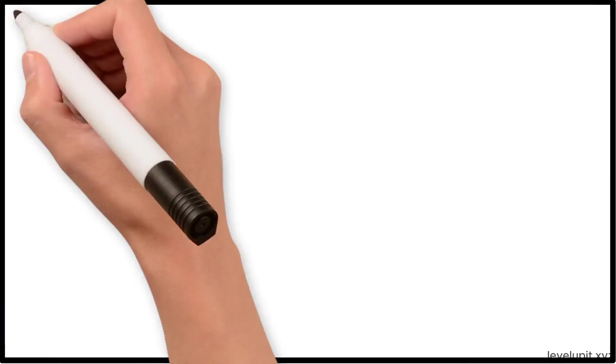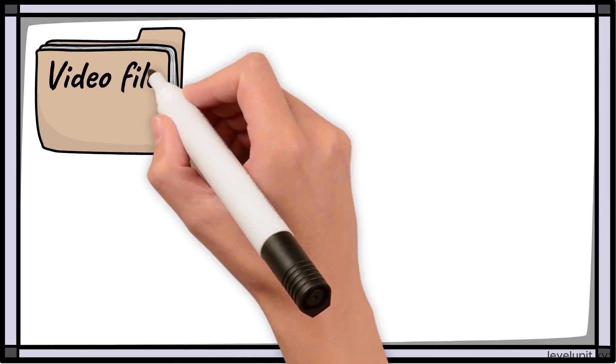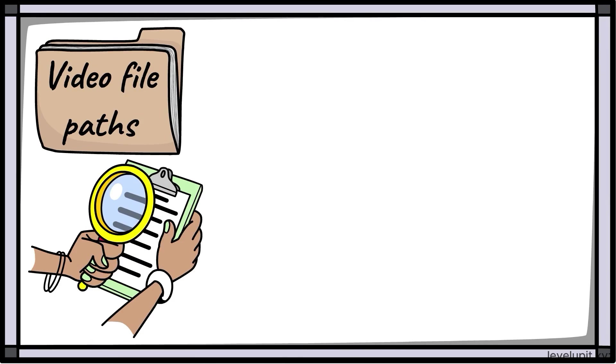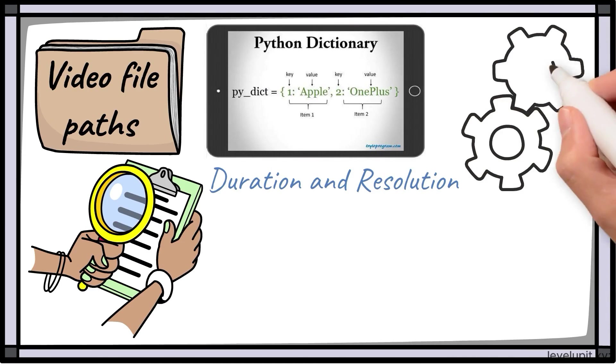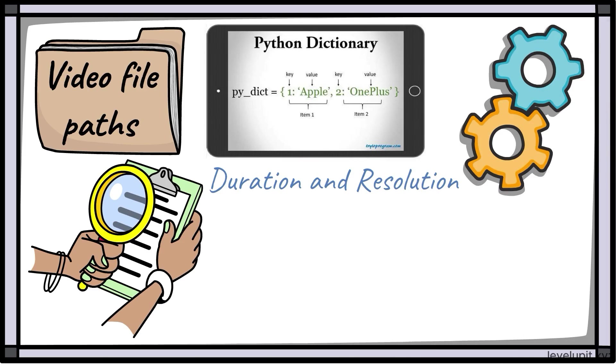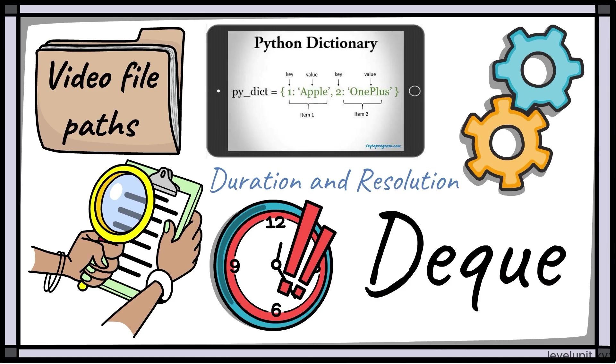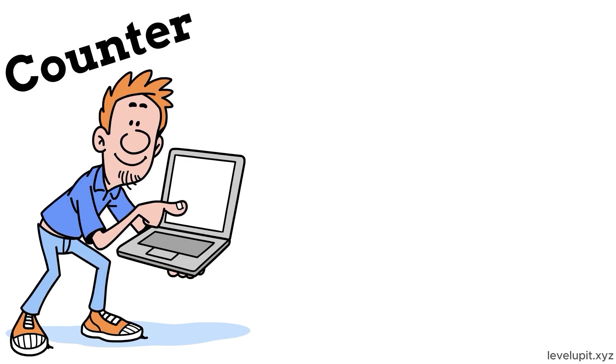Let's ground this with small examples that match daily work. Suppose you scan a folder and collect video file paths. A list holds paths in the order found. A dictionary maps each path to metadata like duration and resolution, so lookups are instant. A set keeps track of paths already processed, so a restart doesn't repeat work. If tasks arrive steadily while a worker consumes them, switch the list to a deque, so adding on the right and removing from the left stays fast.